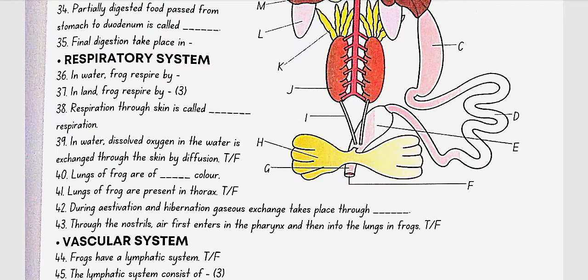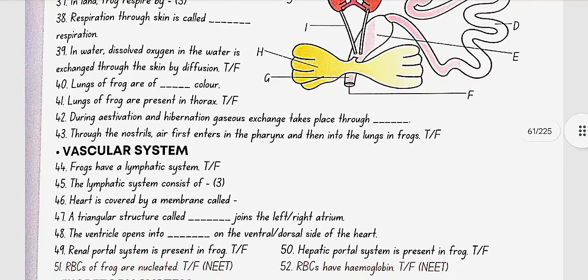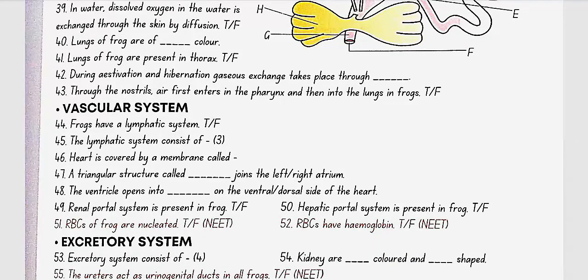Lungs of frog are of pink color. Lungs of frog are present in thorax. Yes, true. During estivation and hibernation, gaseous exchange takes place through skin. Through the nostrils, air first enters in the pharynx and then into the lungs in frog. No, this is false. Air first enters into the buccal cavity.